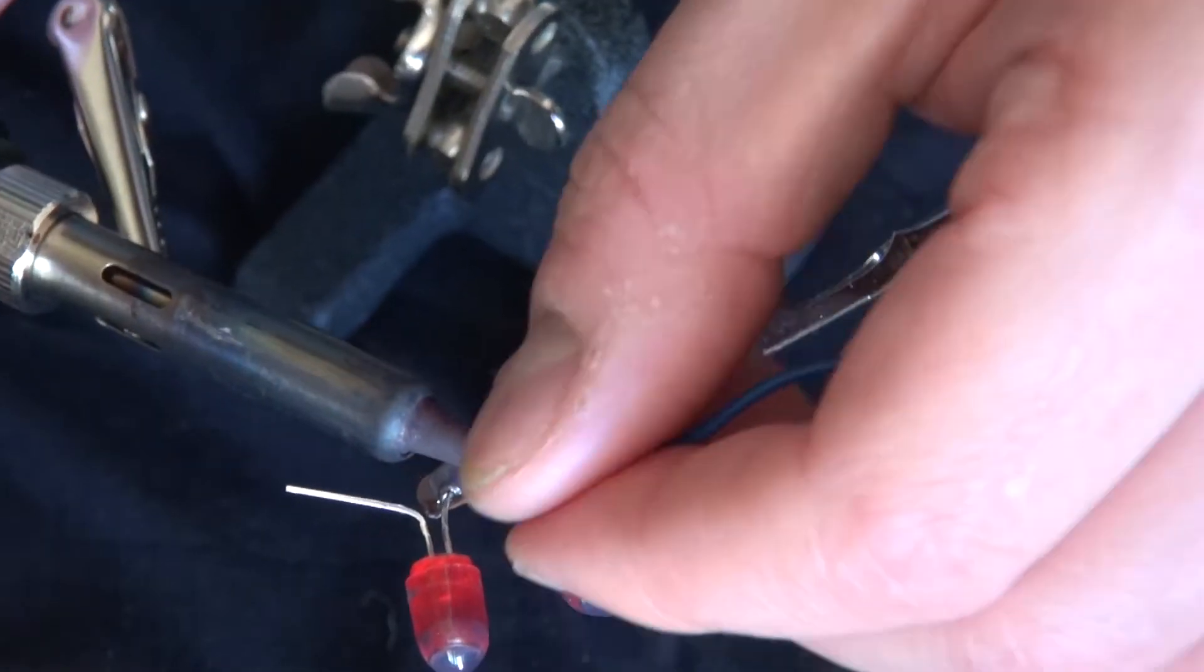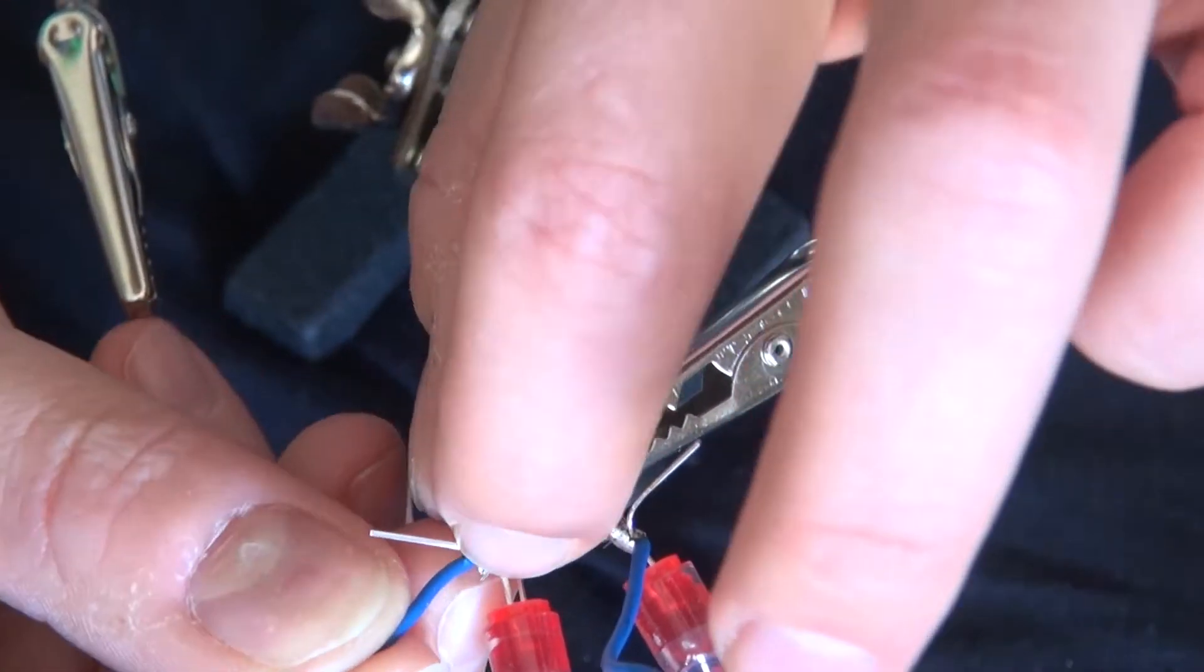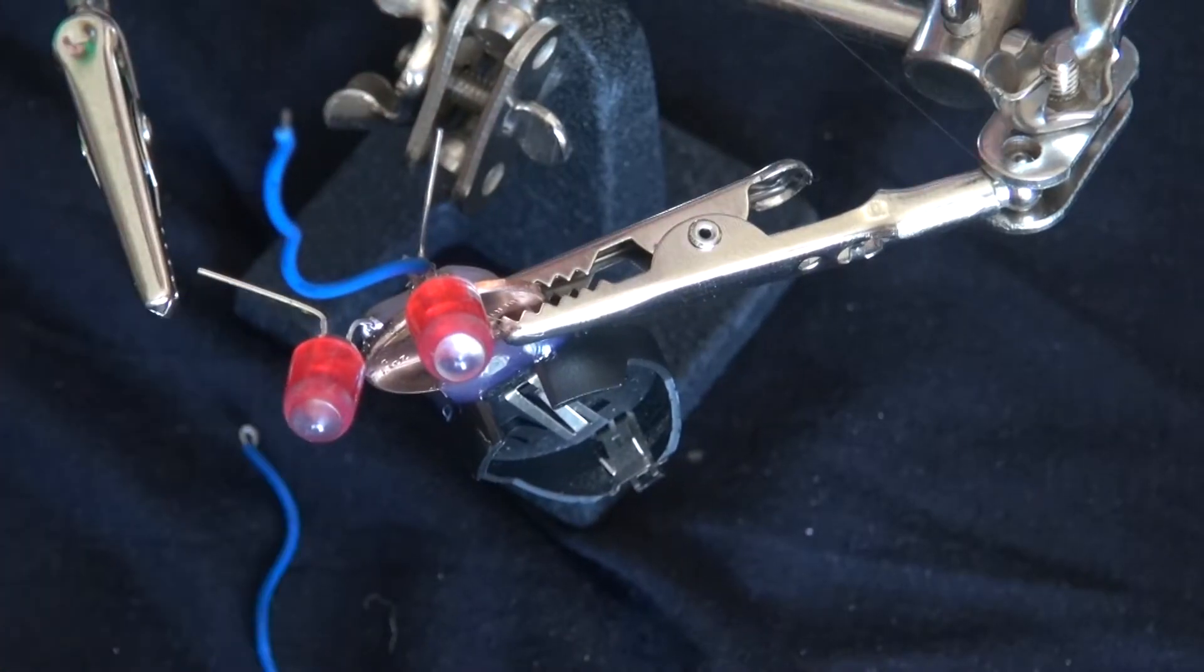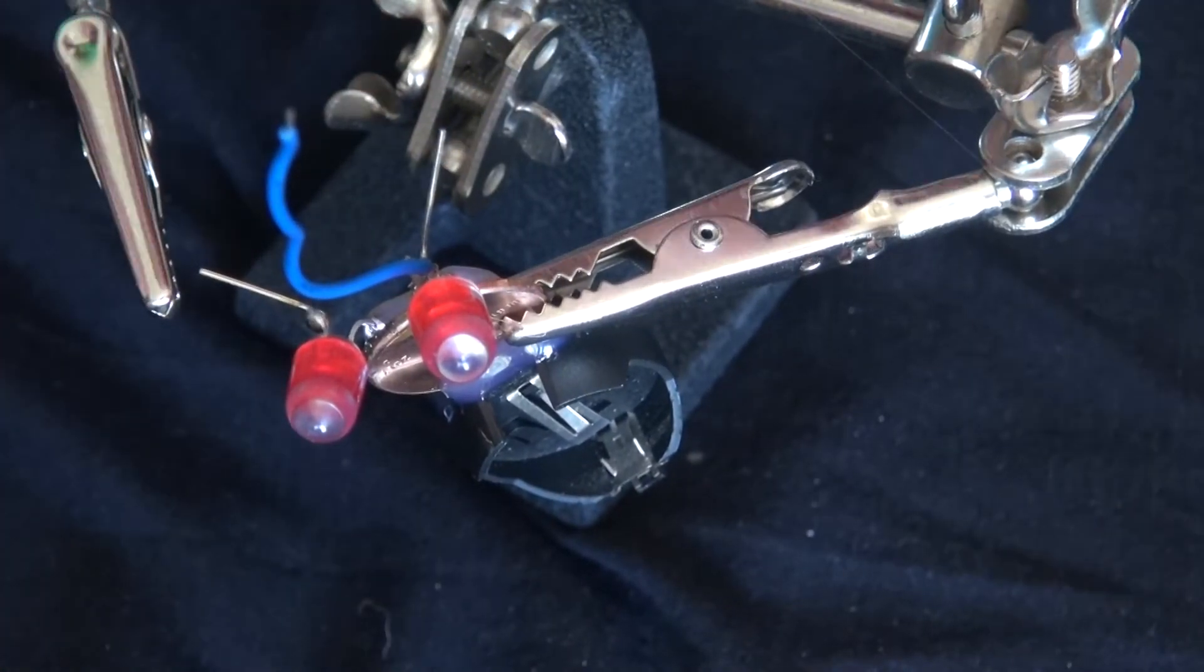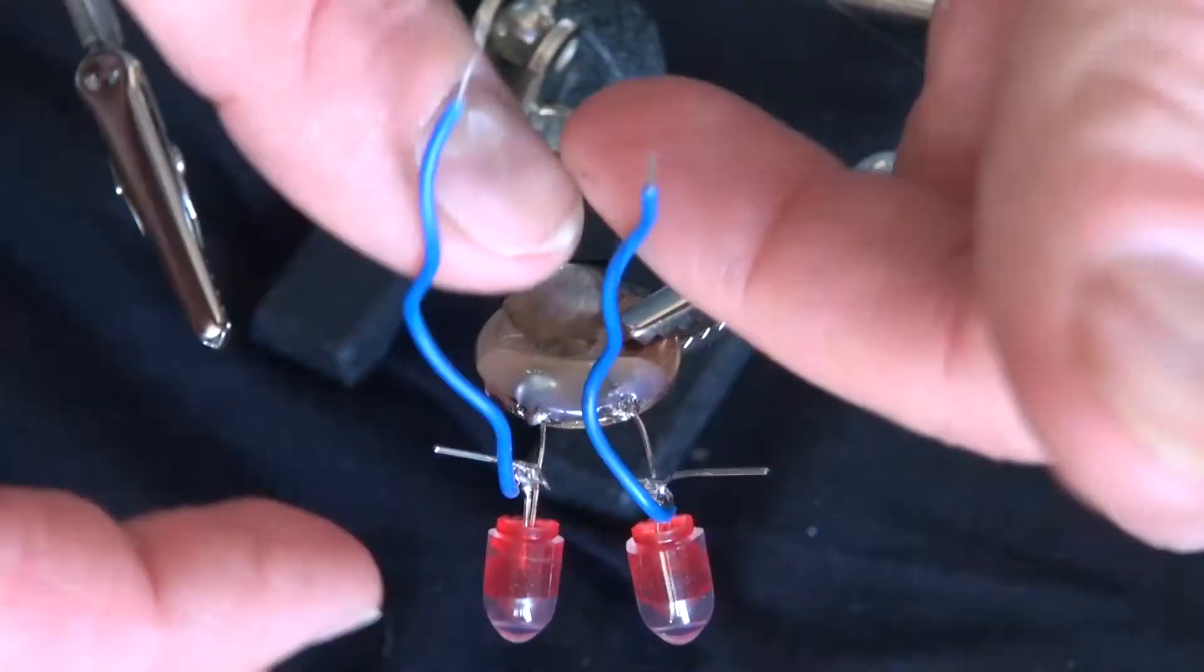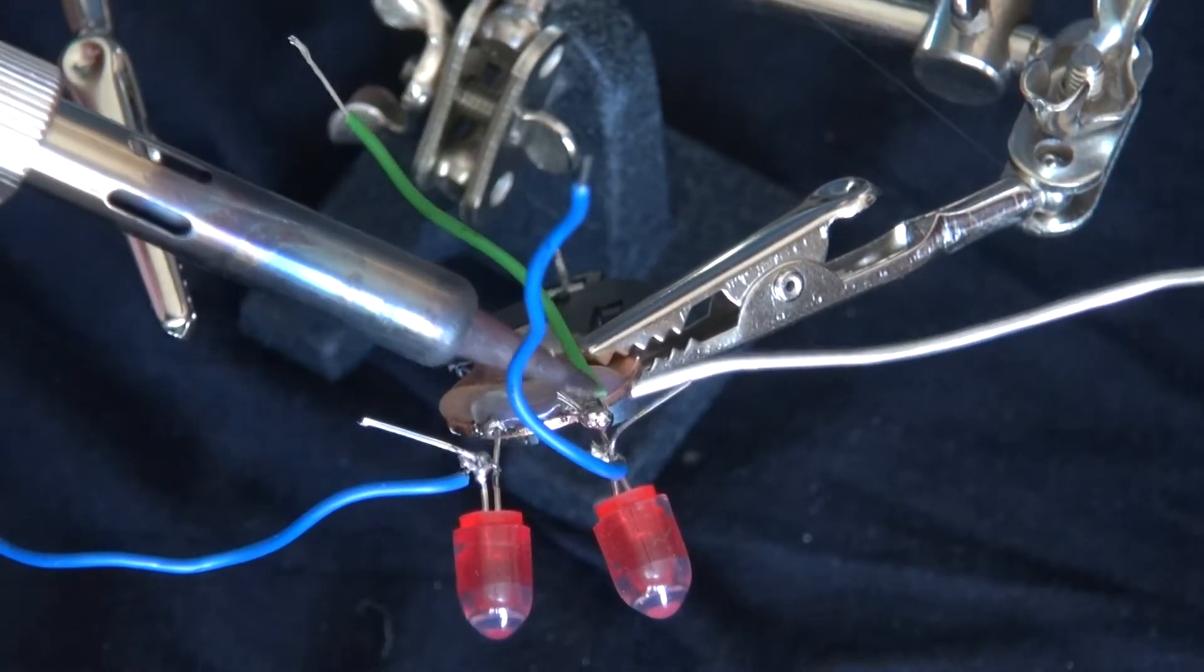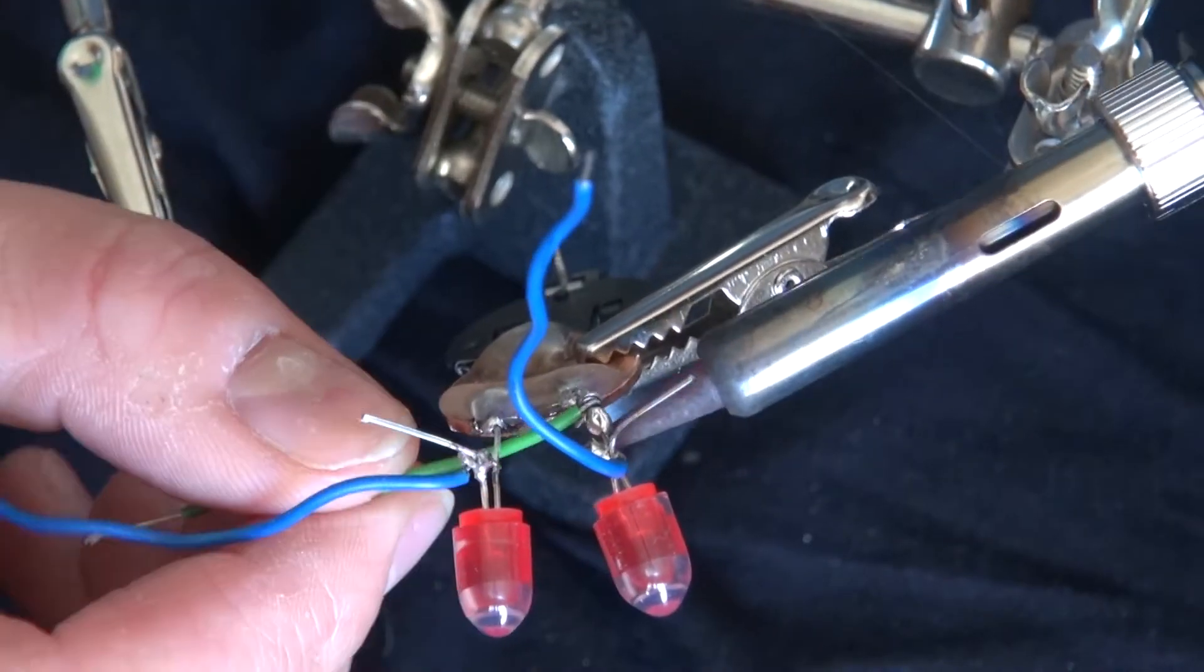Now I'm soldering some wires to the anode of the LED. Now I'm soldering some wire to the cathode of the LED.